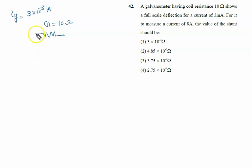For it to measure a current of 8 ampere, we want to measure the current of 8 ampere through it. The value of the shunt should be, so we have to connect some shunt in parallel.